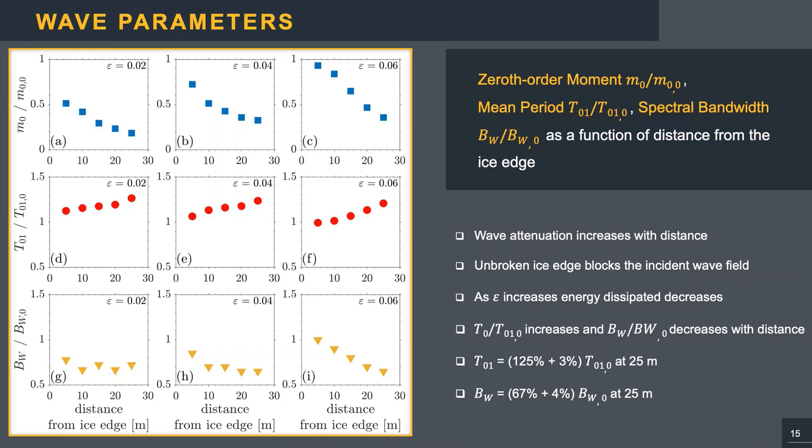As a consequence of wave attenuation, the mean period increases and the spectral width decreases compared to the incident value. For all three tests at the farthest location, the mean period are about 1.25 larger than the incident value, and the spectral bandwidth 0.70 smaller.